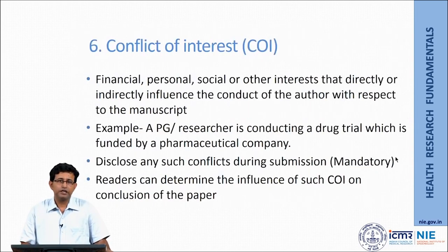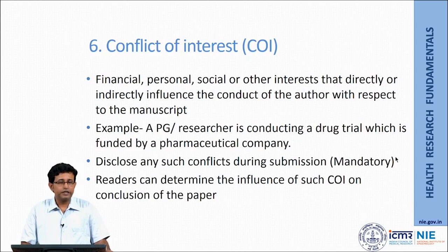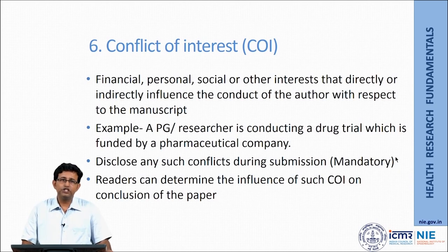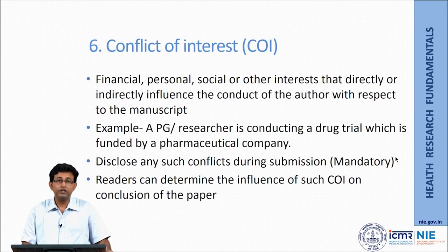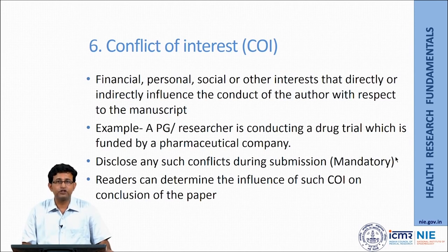The last component — conflict of interest is defined as financial, personal, social, and other interests that directly or indirectly influence the conduct of the author with respect to the manuscript. For example, a researcher conducting a drug trial funded by a pharmaceutical company may have outcomes influenced by that company — and it is not just financial conflict of interest; they may also change the outcome of interest. Make sure you identify those conflicts of interest and disclose them during submission, so that readers can decide the influence of such conflict of interest on the conclusions of the paper.